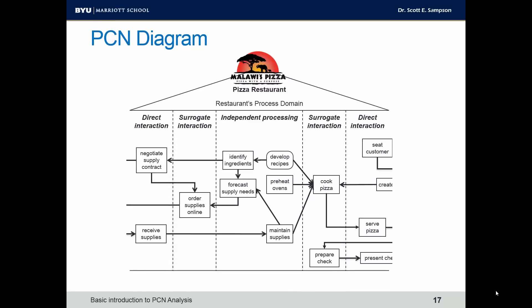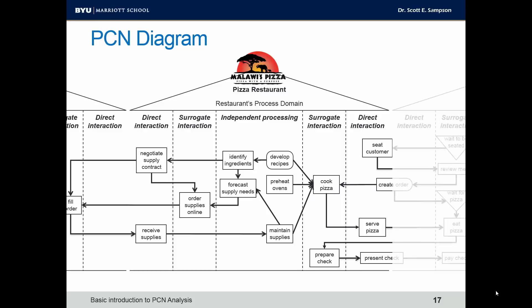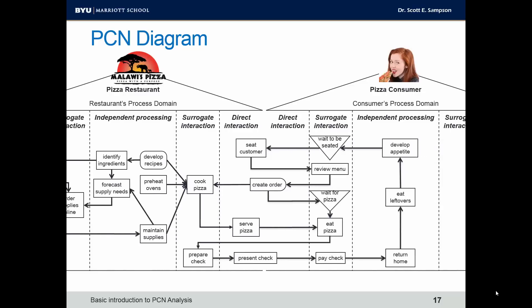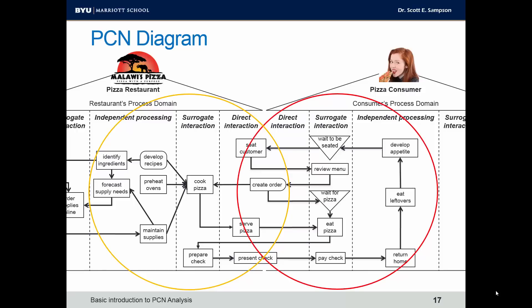Back to our PCN diagram — this is just one entity, and service processes always involve more than one entity. We might see another entity such as a supplier with their own process domain, some of which interface with Malawi's Pizza's domain and some of which are independent. On the right, we have a process domain for a customer who has their own steps — they wait to be seated, review the menu, and so forth. Independently, the customer is developing an appetite and later might be eating leftovers. So in this two-entity PCN diagram, we have steps in each entity's process domain and some that are shared between entities.